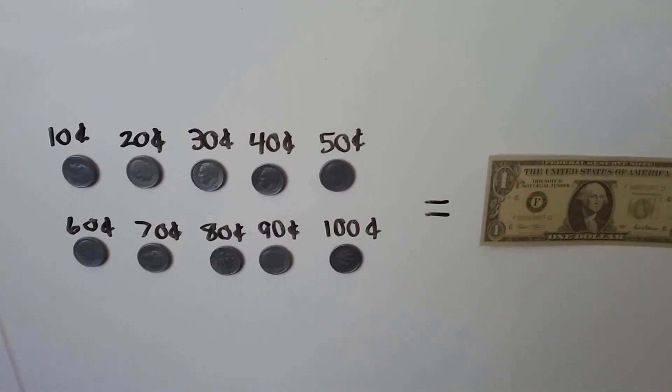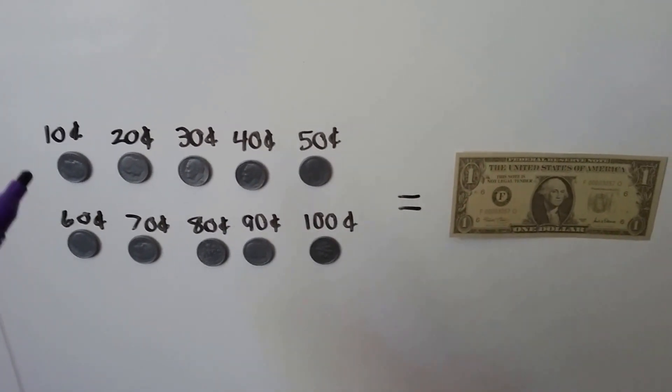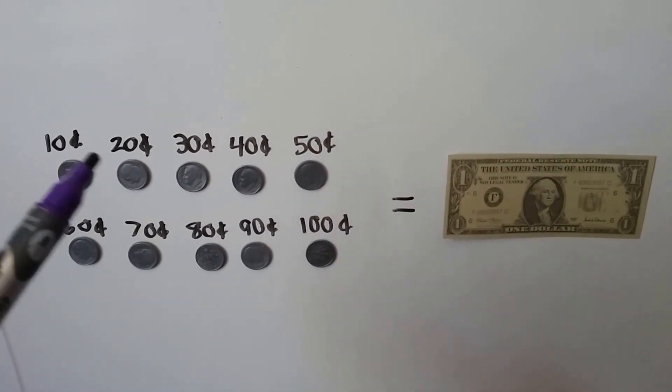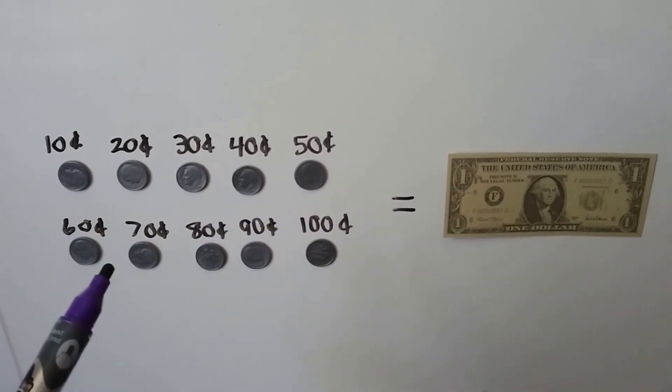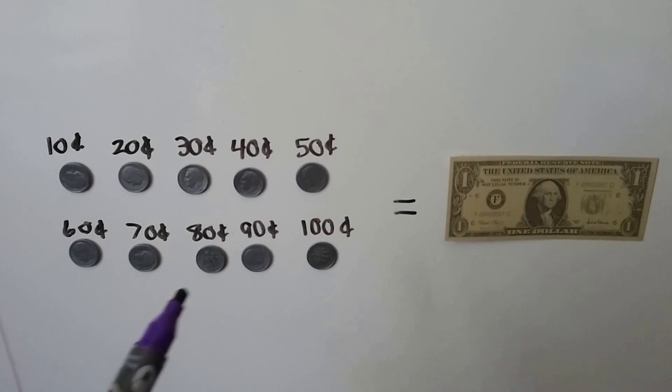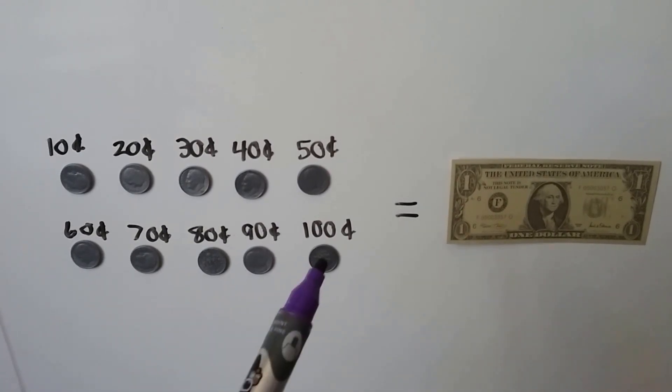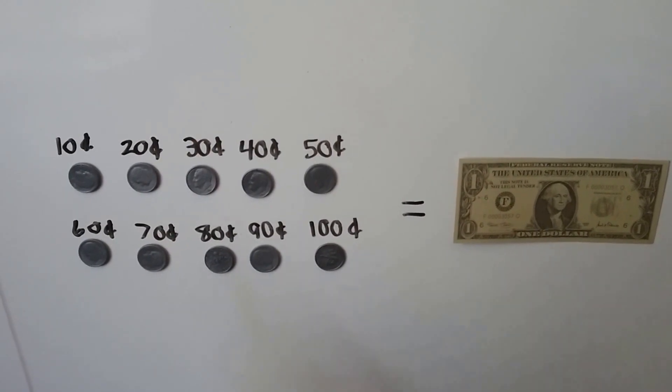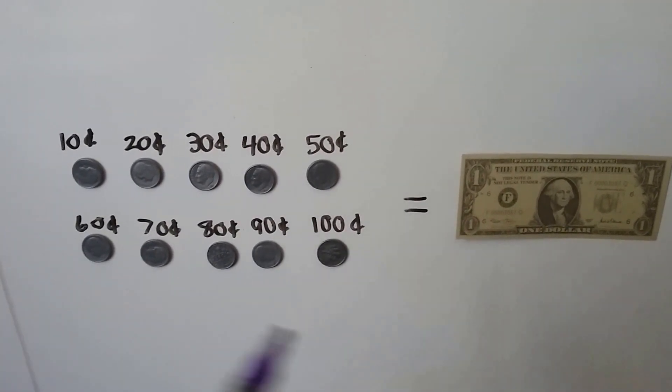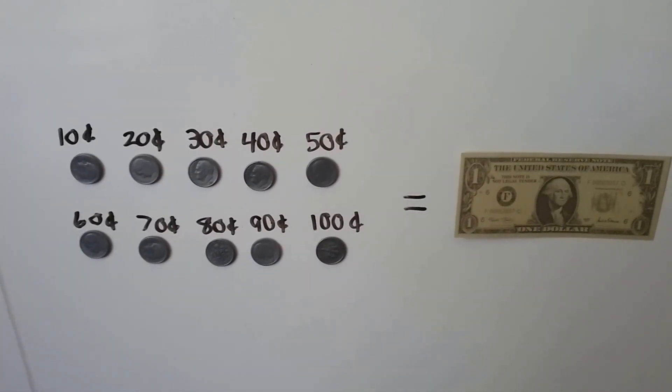Here we have ten dimes. We can count by tens: 10, 20, 30, 40, 50, 60, 70, 80, 90, 100 cents. That's equal to a dollar. So if you have ten dimes, you'll have the same amount as a dollar.